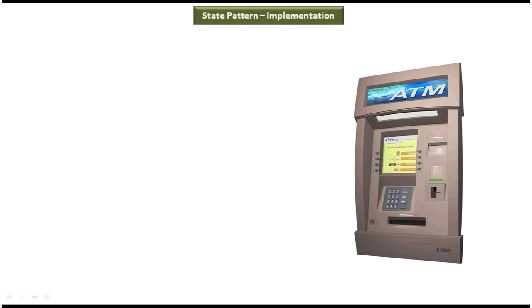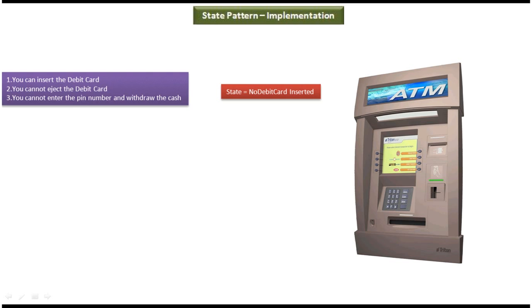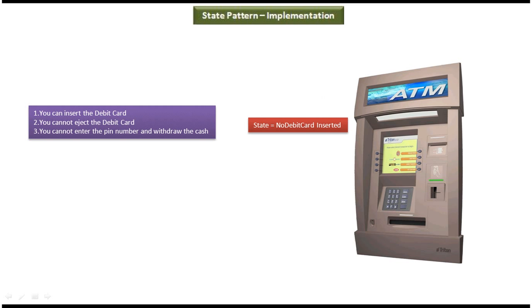Now we will see the scenario where we can use the state design pattern. ATM machine behavior is the best example of state design pattern. Suppose the ATM machine internal state is 'no debit card inserted' — meaning the debit card is not inserted in the slot. Then the only operations you can do are: you can insert the debit card, but you cannot eject the debit card and you cannot enter the pin number.